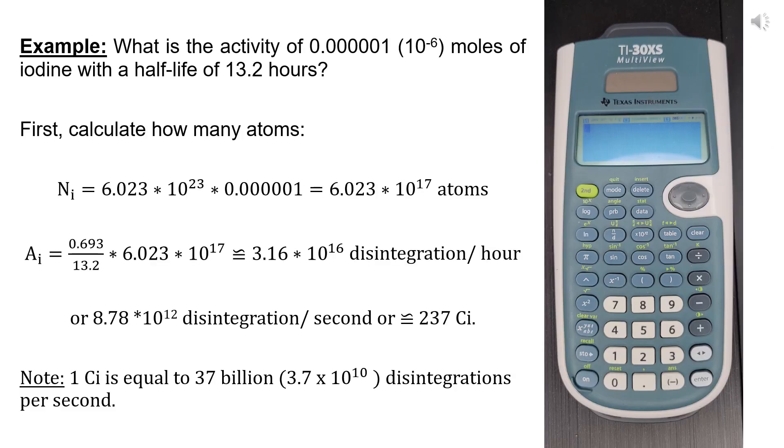For example, what is the activity of 0.00001 or 10 to the power minus 6 moles of iodine with a half-life of 13.2 hours? First, we have to calculate how many atoms are in total. So we have 6.023 times 10 to the power 23, which is Avogadro's number, times our quantity, which is 10 to the power minus 6.